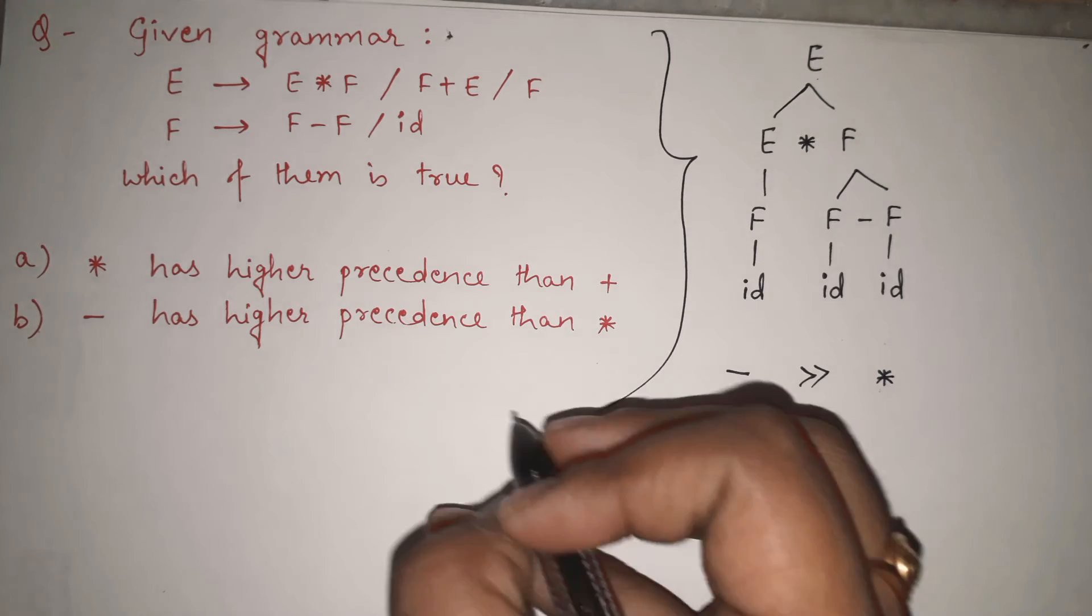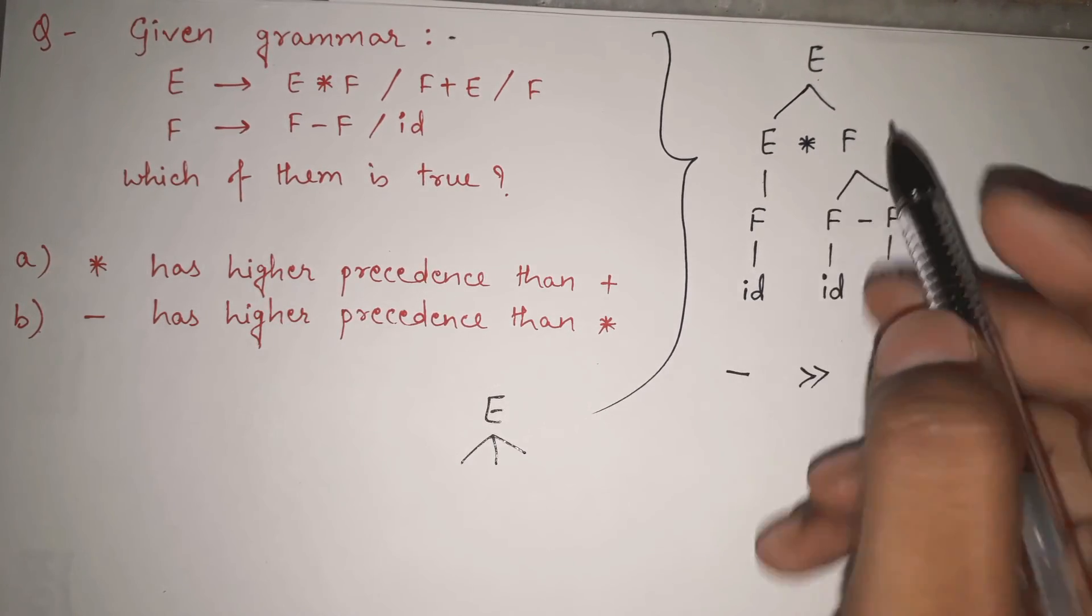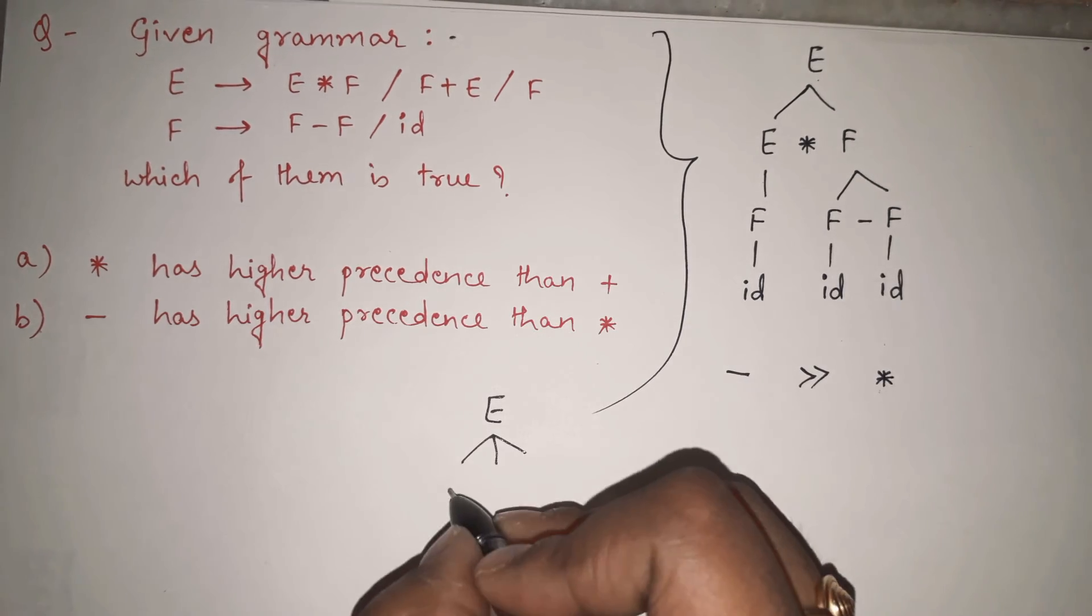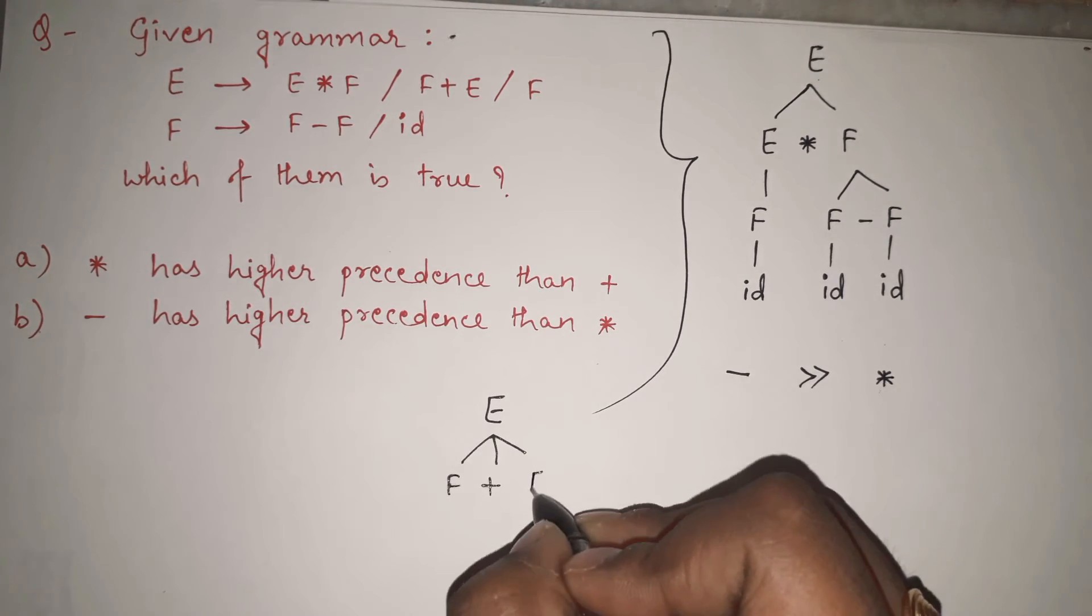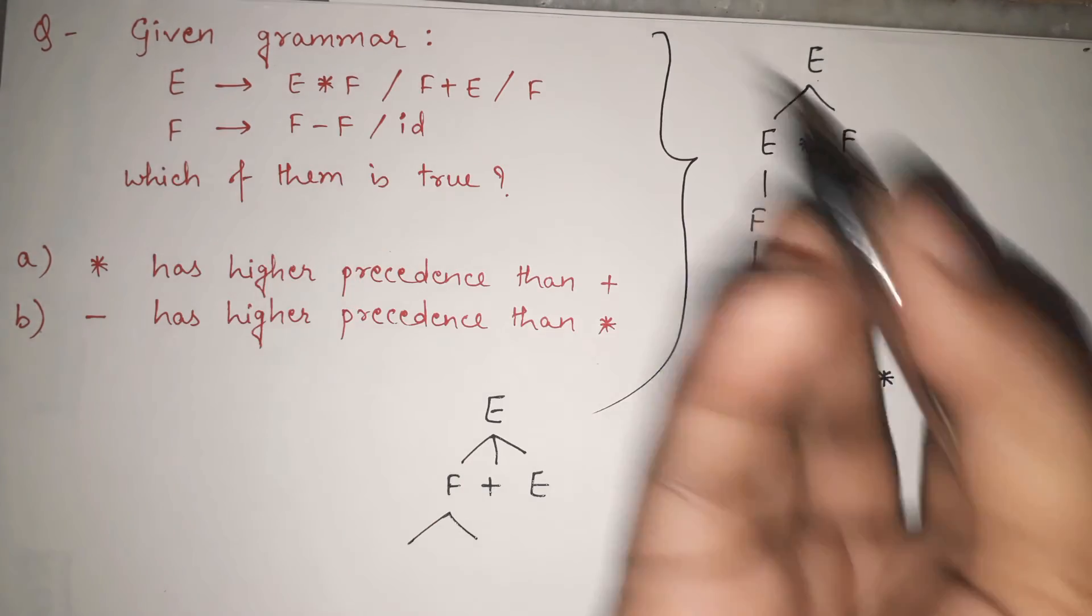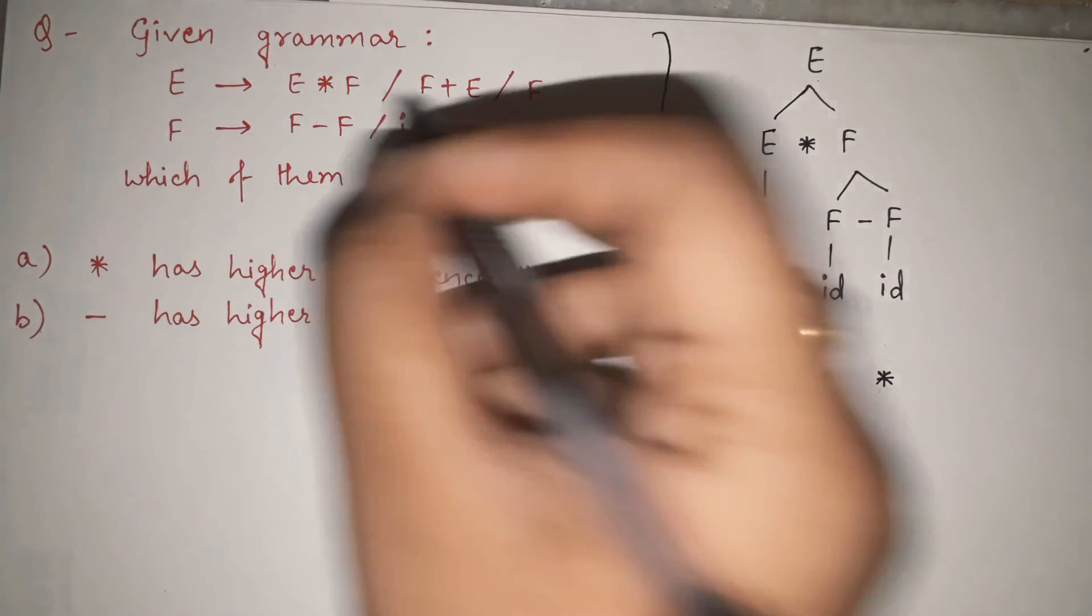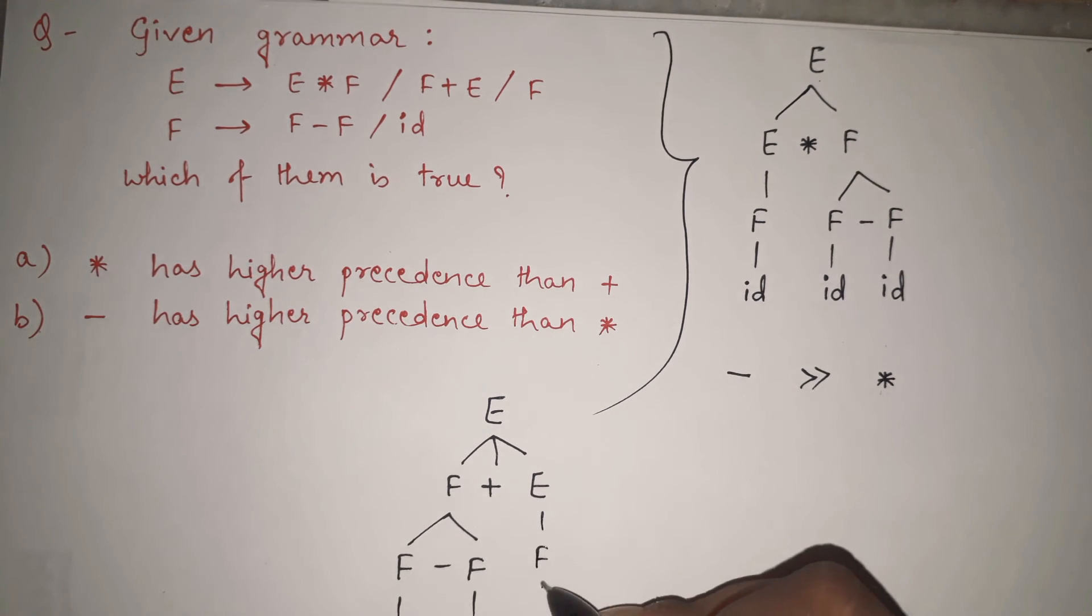So now I am taking the second one. So E gives, we have already taken E star F. Now we will take F plus E. So F plus E. Now again F gives F minus F. There is only one option. We cannot take anything else. F minus F. F gives ID. Then again E, E gives F and F gives ID.